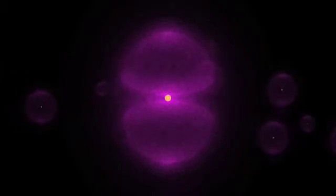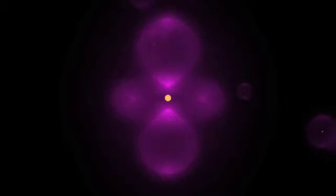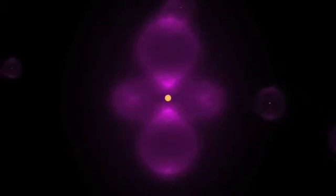This electron cloud surrounding hydrogen is often called an orbital. It is basically all the places where an electron has a chance to be found.